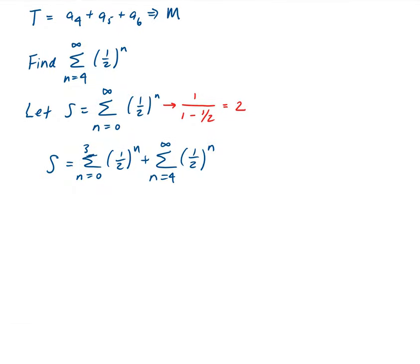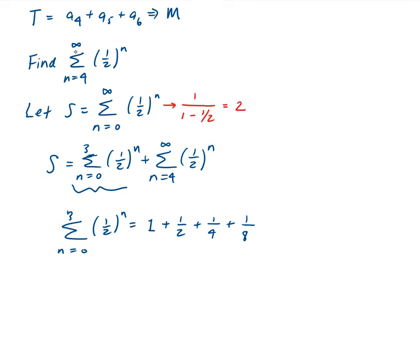Now let's calculate the finite series — the summation from 0 to 3 of (1/2)^n. When n is 0, we get 1. When n is 1, we get 1/2. When n is 2, we get 1/4. When n is 3, we get 1/8. Adding these up — 1 plus 1/2 plus 1/4 plus 1/8 — that gives us 15/8.